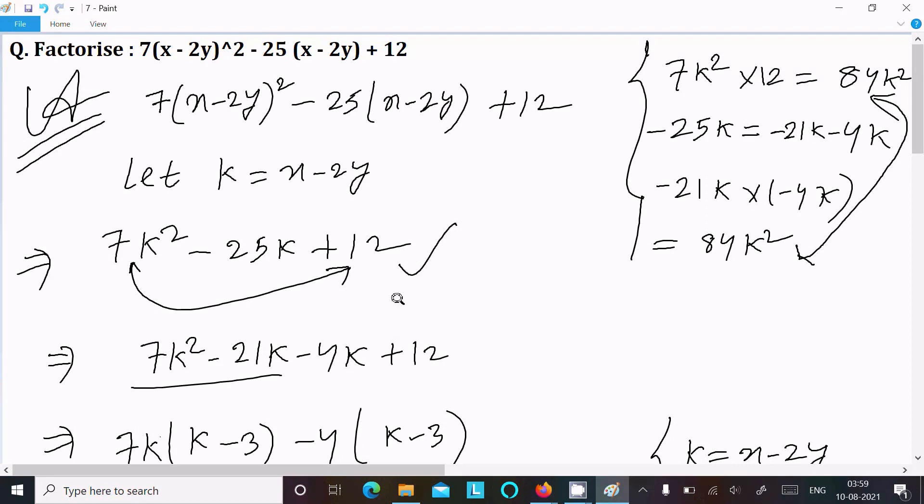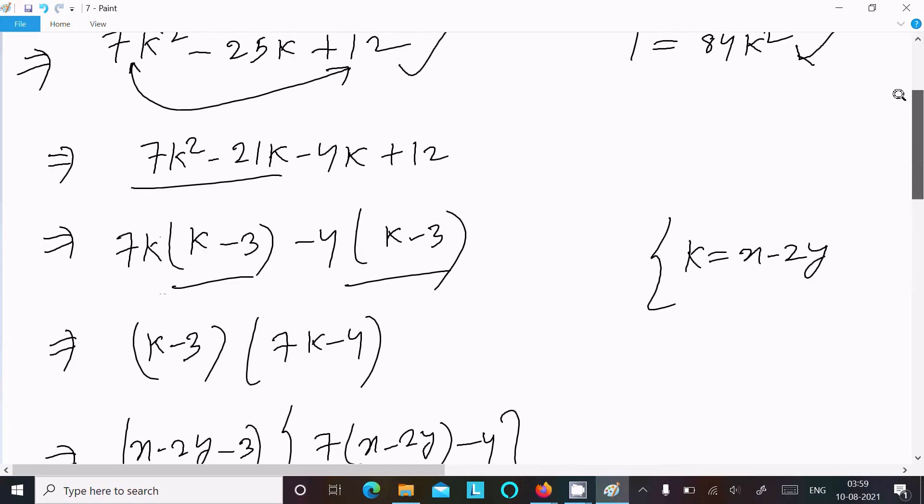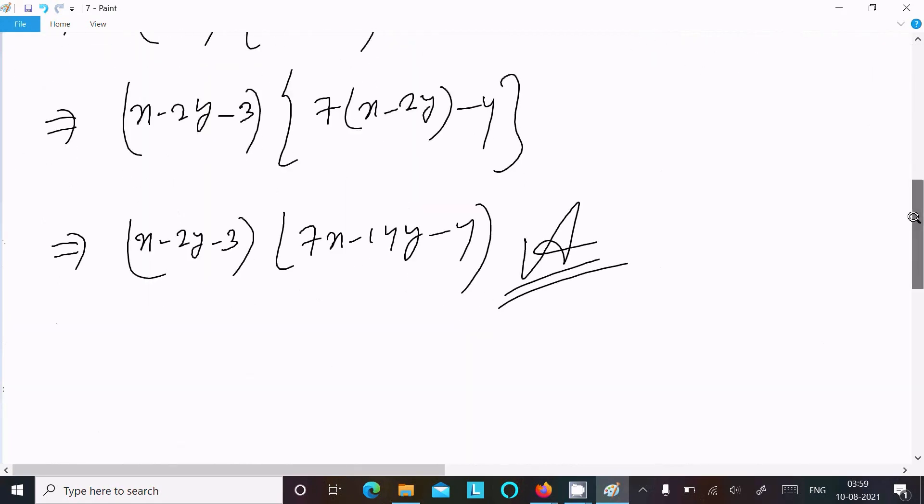Next, multiply first term with the last term and middle term break into two parts. When you add it equals minus 25k and when multiply it equals 84k². This is the way we can do the factorization. Now this video is over, so thanks for watching. See you next week, thank you.